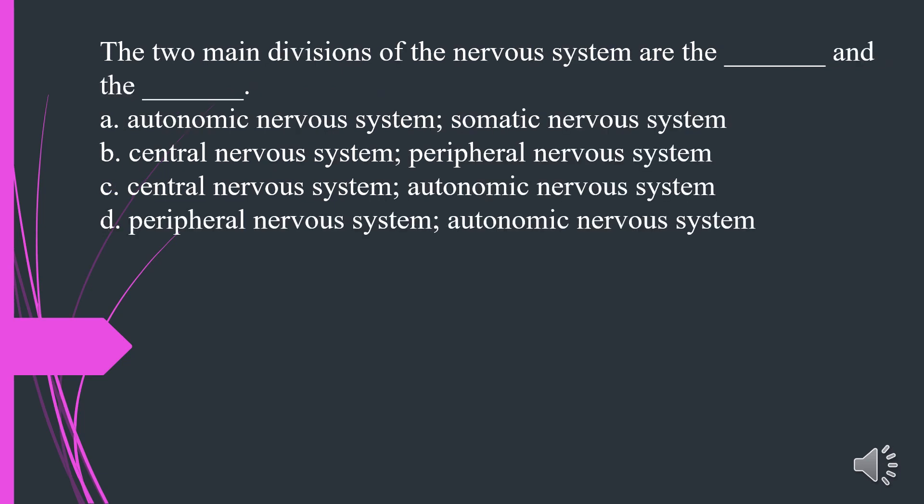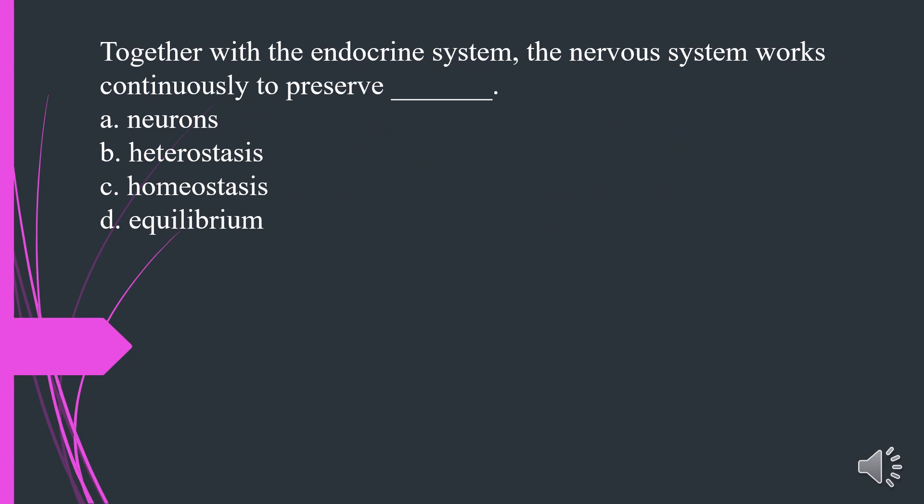The two main divisions of the nervous system are: A. Autonomic nervous system, somatic nervous system. B. Central nervous system, peripheral nervous system. C. Central nervous system, autonomic nervous system. D. Peripheral nervous system, autonomic nervous system. The answer is B. Central nervous system, peripheral nervous system.